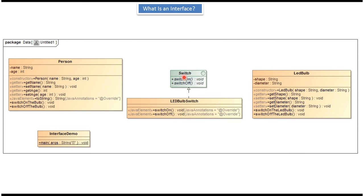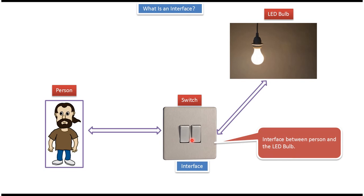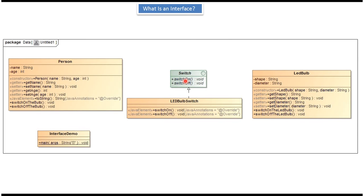Here you can see the Switch interface, which represents the switch. It has two methods, switch-on and switch-off, which are abstract methods that don't have any implementation. This interface is implemented by LED bulb switch. The LED bulb switch class overrides switch-on and switch-off and provides their implementation. Switch is the interface between person and LED bulb. The person will use the switch-on method to switch on the LED bulb, and the switch-off method to switch off the LED bulb.